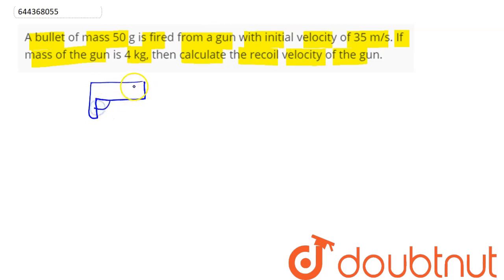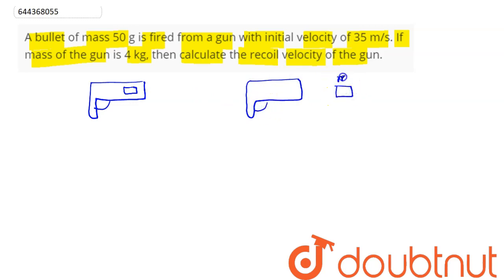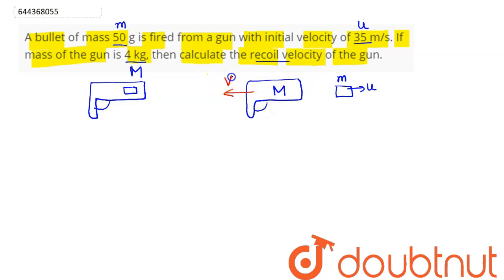So we have here this is our gun, and from this gun here, this is our bullet. When this bullet has been fired from this gun, the mass of the bullet is small m. The initial velocity of the bullet is 35 meters per second, so this is u. The mass of the gun is capital M. We need to find the recoil velocity of the gun.